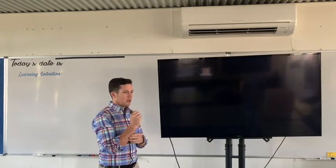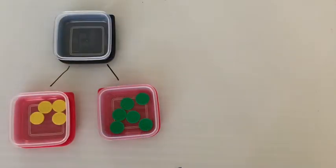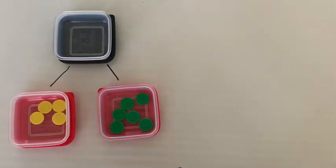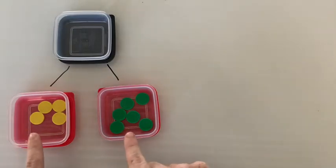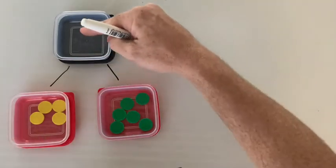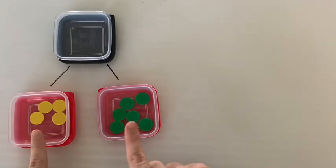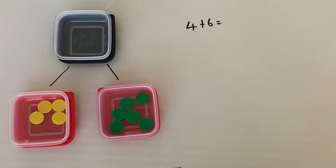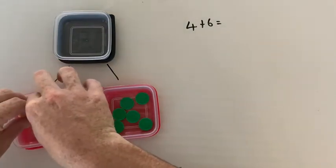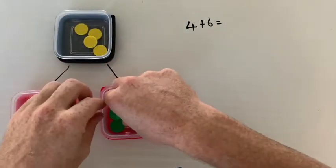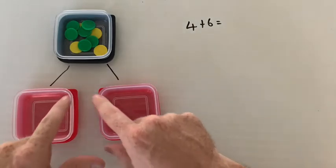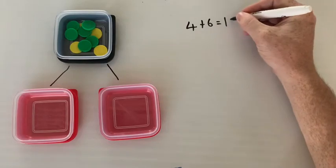Let's go through some demonstrations of addition and subtraction — some ways you can use manipulatives. In this one, on this side we've got four counters, and on this side we have six counters. The red containers are parts, and the black is the whole. So we talk about addition as a part plus a part equals a whole. Four plus six equals — we add those together: 1, 2, 3, 4, 5, 6, 7, 8, 9, 10. When we take our two parts and add them together, we get our whole, which in this case is ten. Four plus six is ten. We can also show six plus four also equals ten.